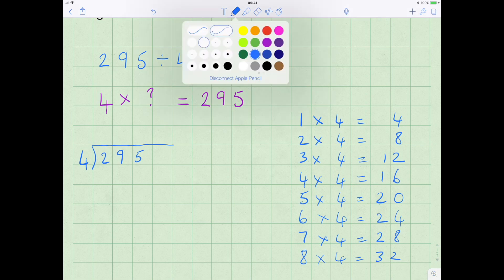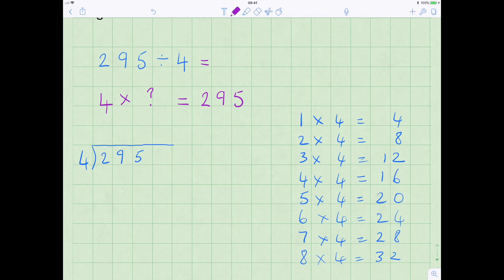So the first question, does 4 go into 2? No, 4 doesn't go into 2. Does 4 go into 29? Yes, it does. 7 times 4 is 28, so when we're dividing 4 into 29 we say it goes 7 times, and then we need to work out the remainder. So 4 sevens are 28, and 9 minus 8 is 1, and 2 minus 2 is 0.